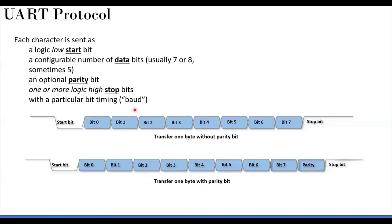Baud rate comes from communication theory where a 'baud' represents a group of bits forming a signal. In this context, since one bit equals one signal, baud rate and bit rate are interchangeable. When you set up a serial terminal you set the baud rate — for example, 9600 bps or 115200 bps. Both the transmitter and receiver must be set to the same rate, otherwise data will be missed.